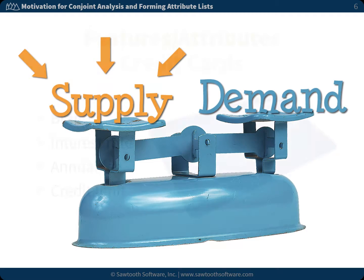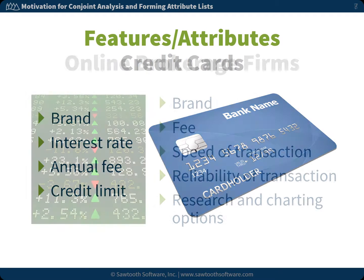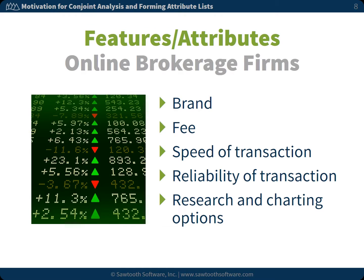Products and services are composed of features or attributes. For example, a credit card consists of brand, plus interest rate, plus annual fee, plus credit limit. Or, an online brokerage firm would feature brand, plus fee, plus speed of transaction, plus reliability of transaction, plus research or charting options.